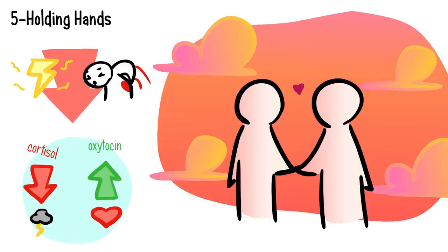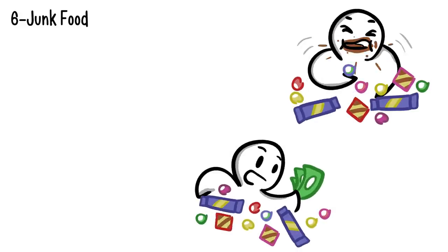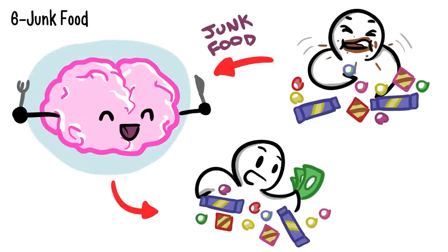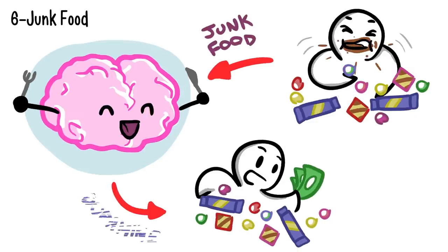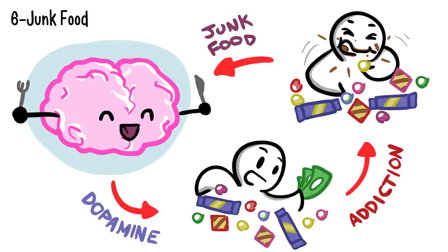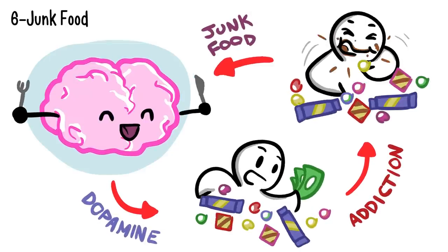Fact number six: junk food. Do you have a difficult time stopping yourself from buying and eating junk food? Food addiction involves the same areas of the brain as drug addiction. Junk food activates the reward system in your brain, releasing dopamine. Your brain unconsciously seeks out rewarding behavior, making it harder for you to control yourself from eating processed food.